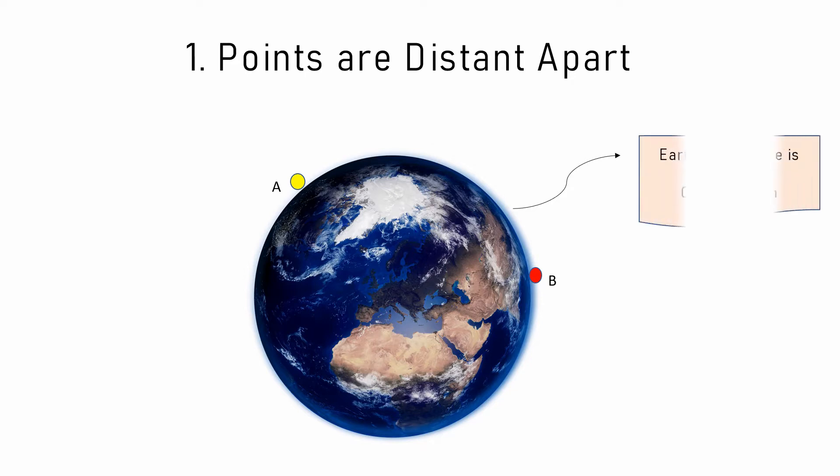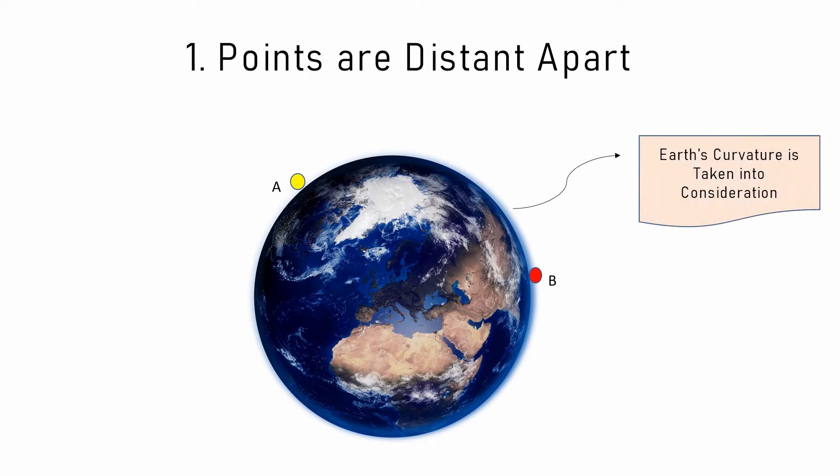As shown in the figure, we have points A and B which are far apart, and the earth's curvature is taken into consideration. The second feature is that plumb lines intersect at the earth's center.